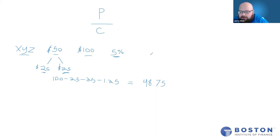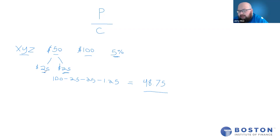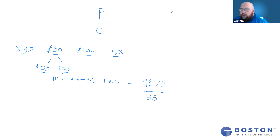Now you might be thinking that the margin interest is eating away at our profit and our holding period return is going to be lower. But in fact, you'd be wrong, because our cost has also changed. Even though we bought the stock for $50, we only paid $25 out of our own pocket because we borrowed the other $25 from the firm. Our cost in holding period return is only our own personal out-of-pocket cost, so in this case it's only $25. So we have $48.75 divided by $25, which gives us 1.95, equaling a 195% holding period return.